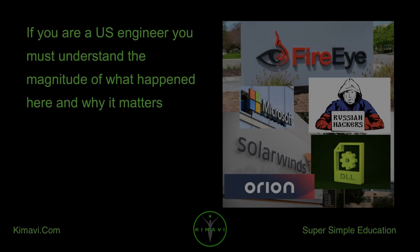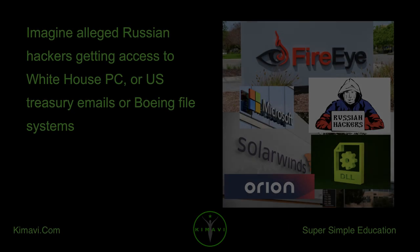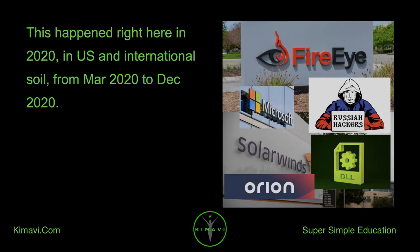If you are a U.S. engineer, you must understand the magnitude of what happened here and why it matters. Imagine alleged Russian hackers getting access to White House PCs, U.S. Treasury emails, or Boeing file systems. This happened in 2020 on U.S. and international soil, from March 2020 to December 2020.